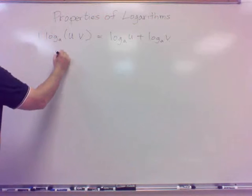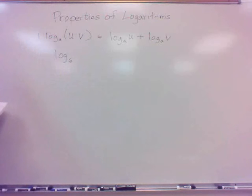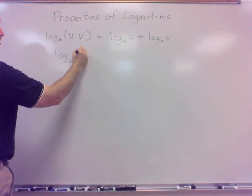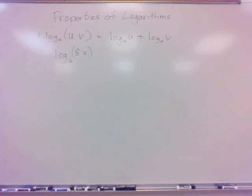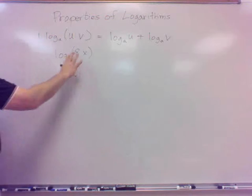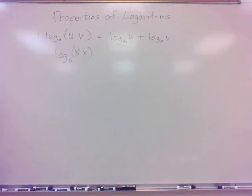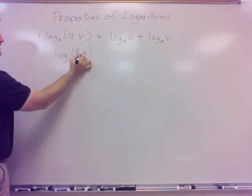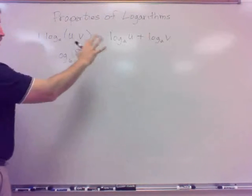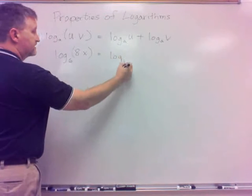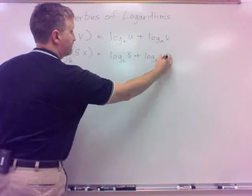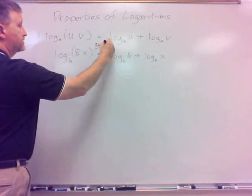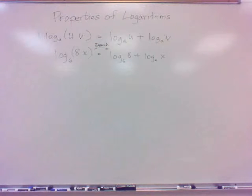For example, if I have log base 6 of 8x — that is two things multiplied, 8 times x. There will be times when this will happen. Note that 8 times x is not usually written with a multiplication sign, but that is 8 times x. What this property allows us to do is say that's also equal to log base 6 of 8 plus log base 6 of x. Going that direction is what we term expanding.